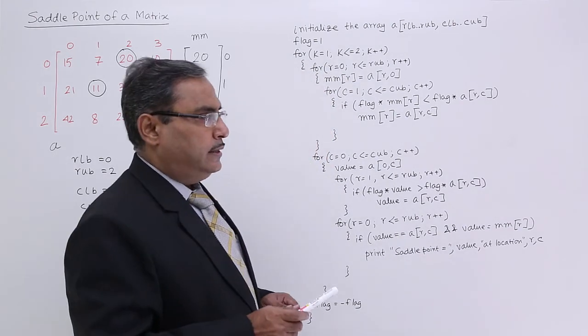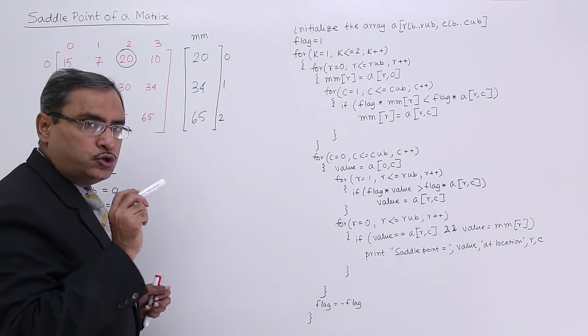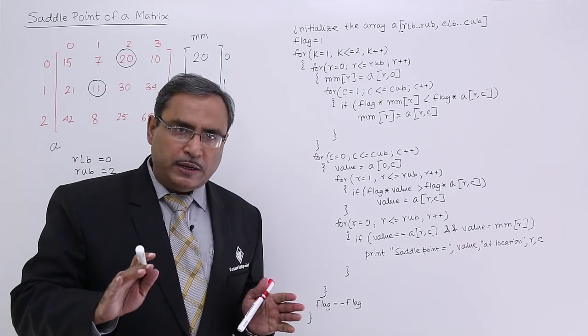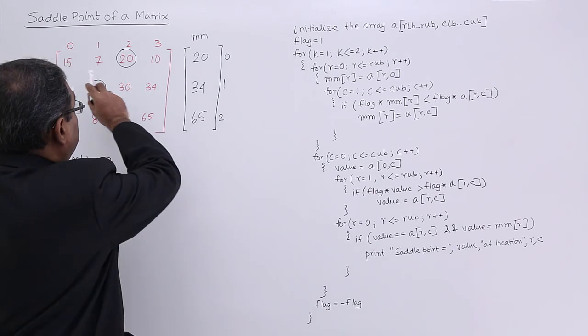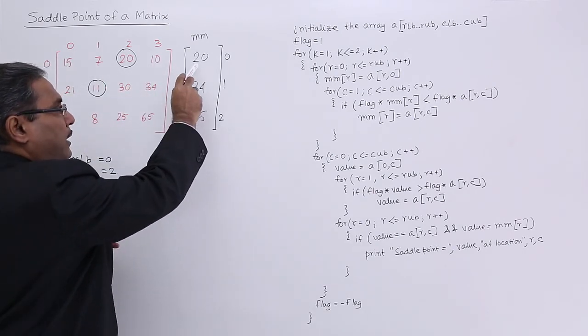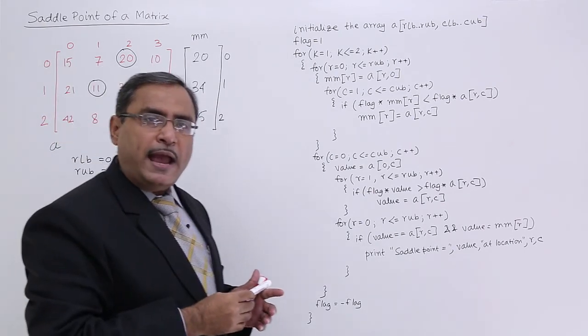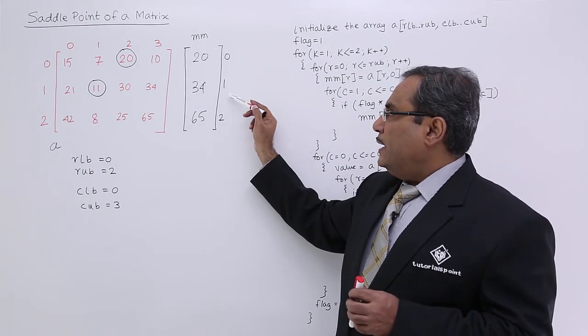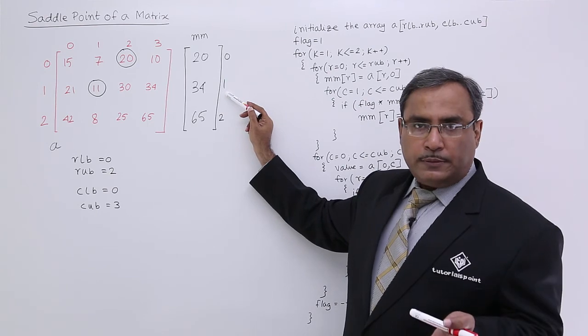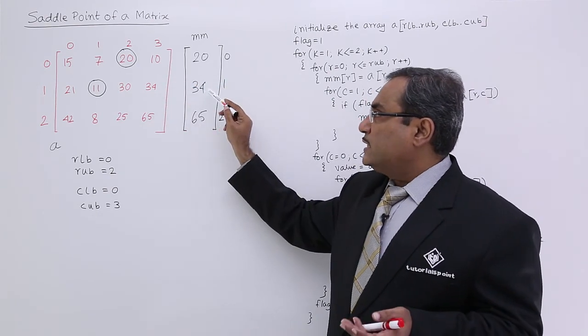We planned in this way that at first we shall consider row wise maximum and column wise minimum. We can also go for other ways. I shall find out the maximum of each row and put them in the respective mm array. The location number in this particular mm array will denote the row number for which the maximum data has been put.